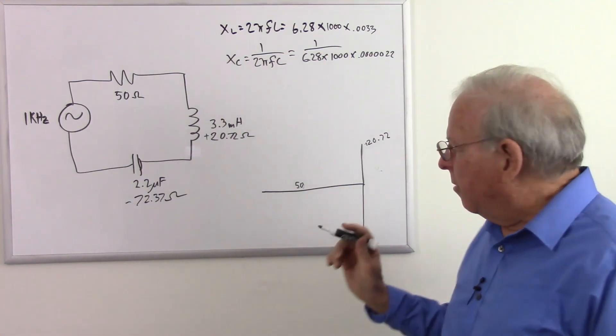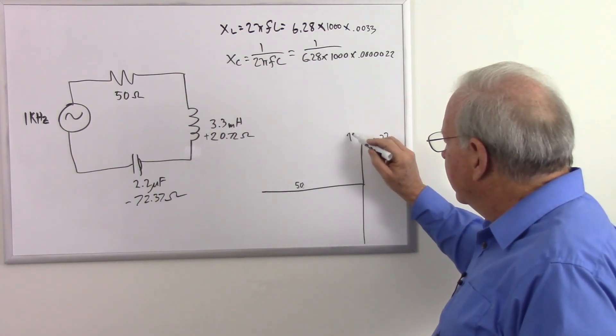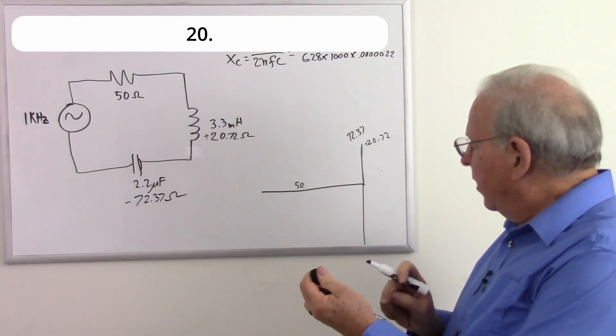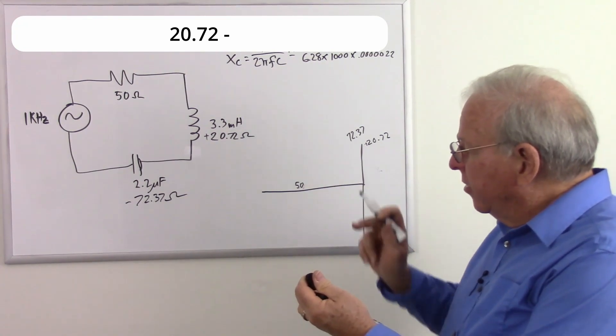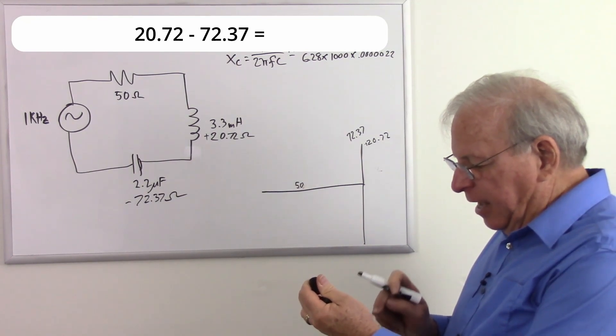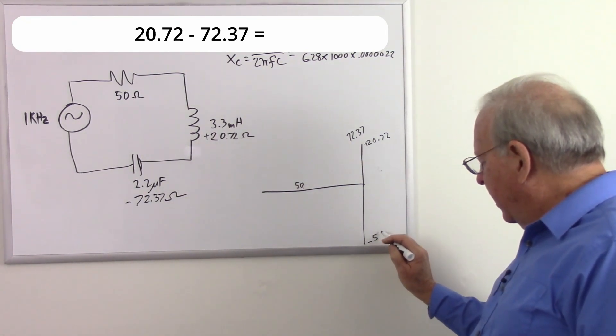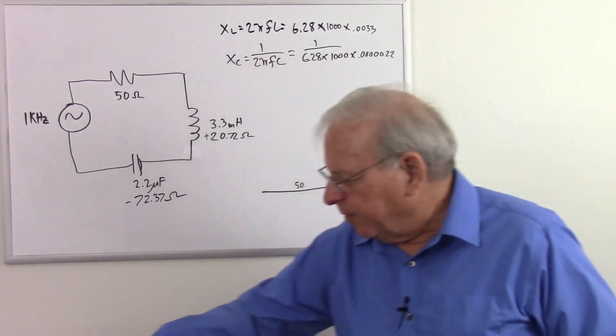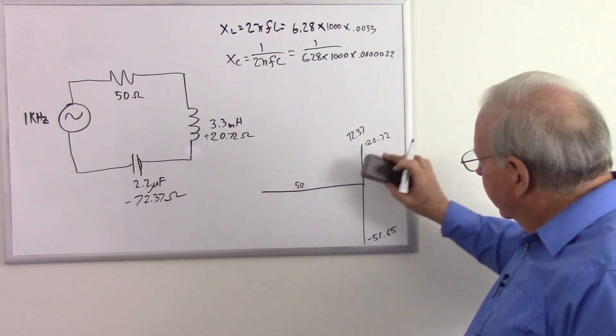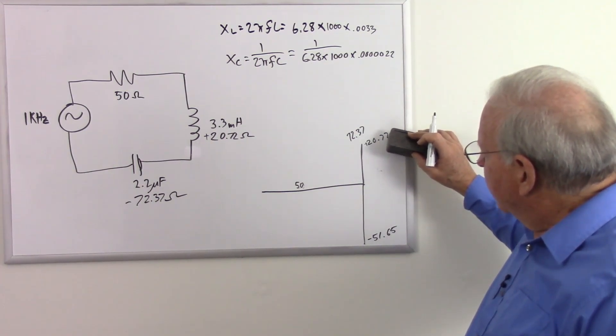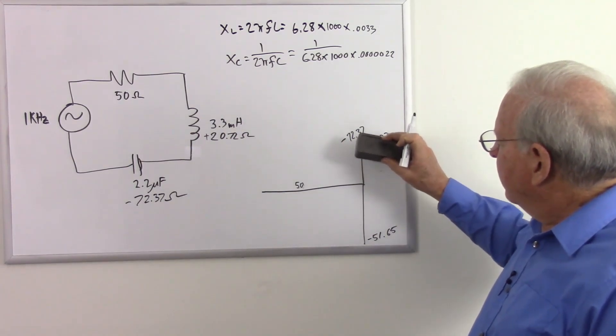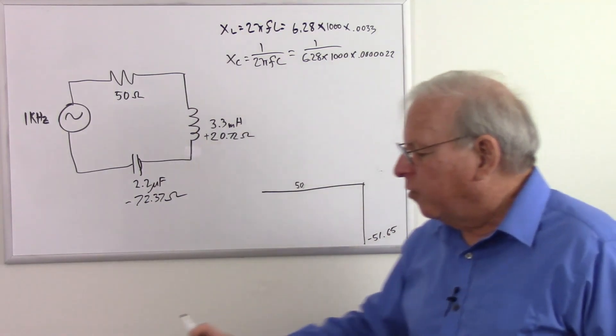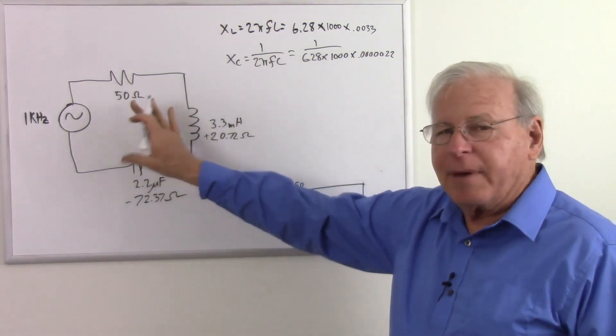So that's negative 72.37. That's going to take us down to 20.72 minus 72.37 equals negative 51.65 for our total reactance. So we added 20.72 ohms of inductive reactance, subtracted 72.37 ohms of capacitive reactance, leaving us with 51.65 ohms of total reactance, and it's a negative number. So basically this is a capacitive circuit.